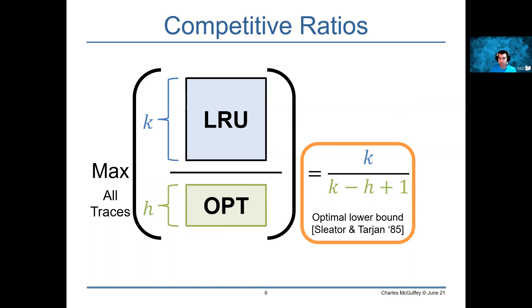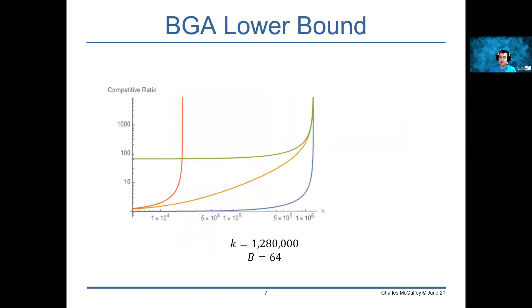In the block granularity aware model, though, we provide different results. This graph here shows a few different lines where the x-axis is the size of the optimal cache we're comparing against for a constant value of k and b, and the y-axis is the competitive ratio. So higher means there's a larger difference between the deterministic online policy and the optimal offline policy. The line in blue here is the Sleator-Tarjan bound that I just mentioned, k over k minus h plus 1. The orange line is our general lower bound for deterministic policies in the block granularity-aware model, which is roughly k plus bh over k minus h plus 1.